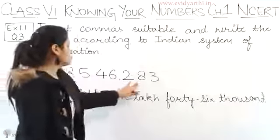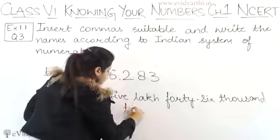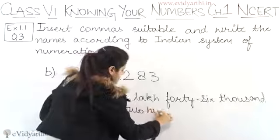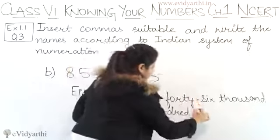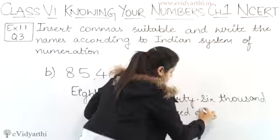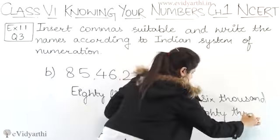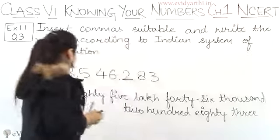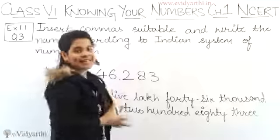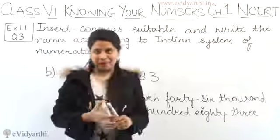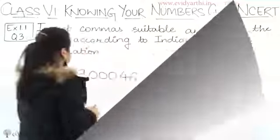Next we have 46, and after 46 there are three digits - three digits come in thousands. So 85 lakh 46 thousand. And then we have 283. So we have 85,46,283. This was Part B.